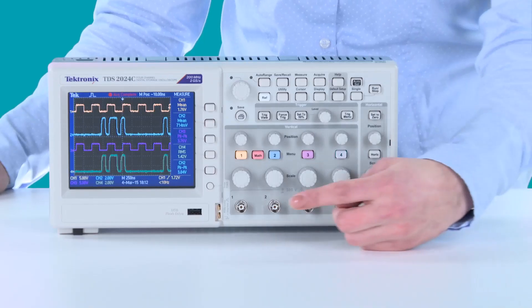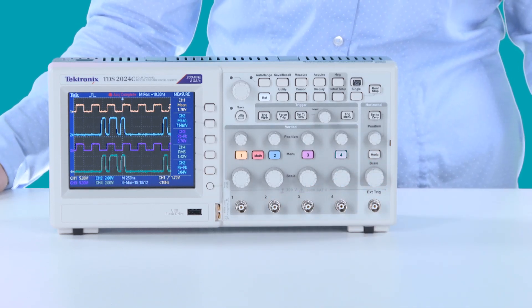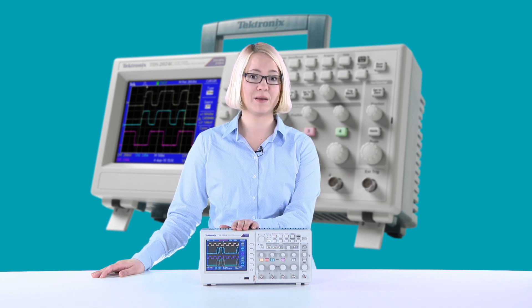TDS2024C comes with four analog input channels and has 200 MHz bandwidth, and you have on all four channels 2 Giga samples per second sample rate available.